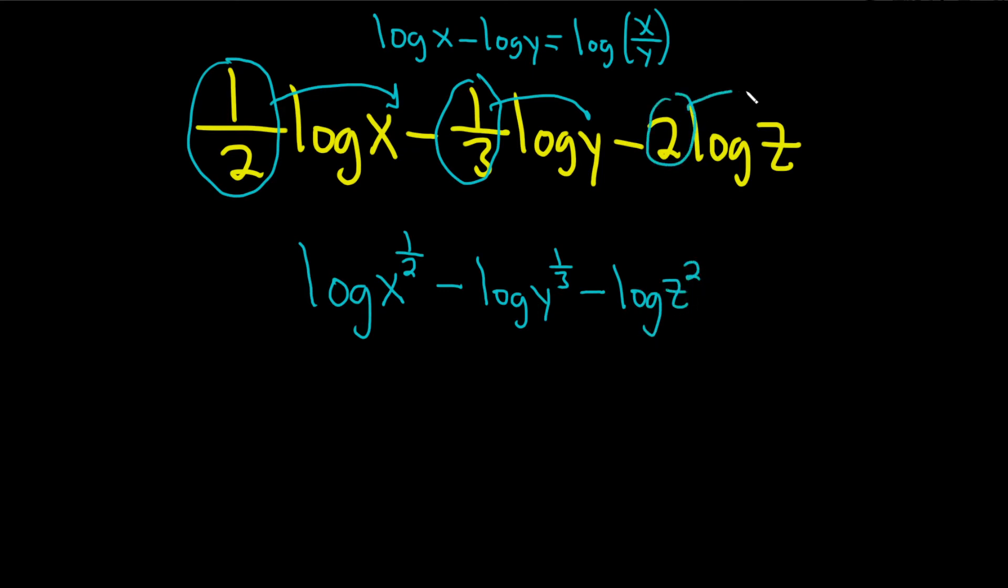And then minus log of z squared. Okay, just again, taking this number and just bringing it up, making them the exponent.